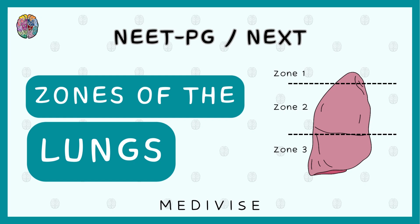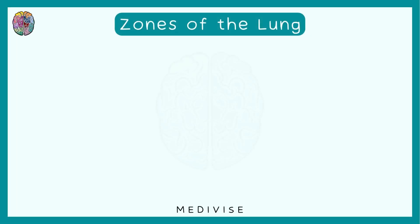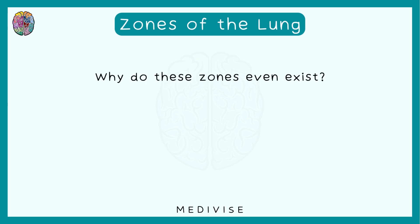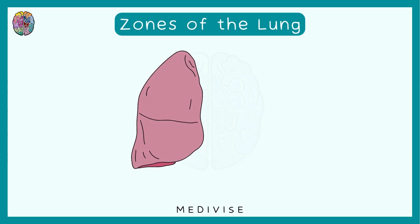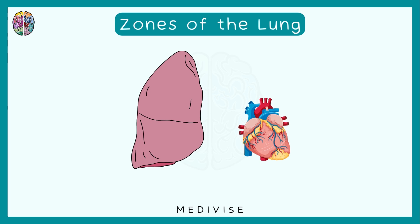Hello everyone, welcome to MediWives. In this video, we're going to be studying about the zones of the lungs. The pulmonary arteries carry the deoxygenated blood from the heart to the lungs to get oxygenated.